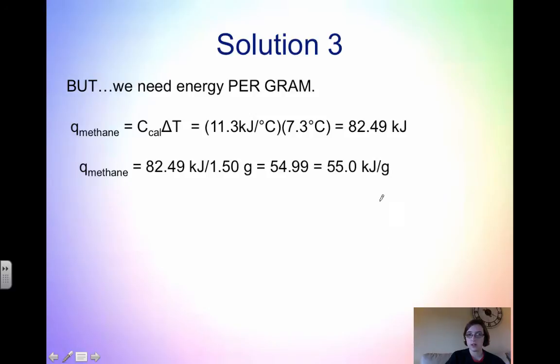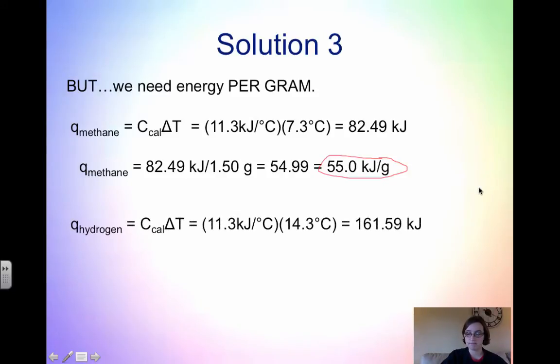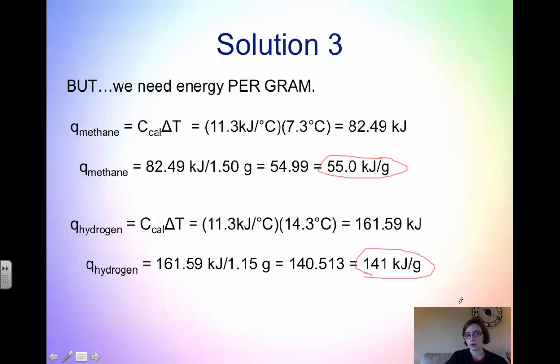So for methane, we have 55 kilojoules per gram. If we burn 1 gram of methane, we produce 55 kilojoules of energy. Then for hydrogen, that was 161.59 kilojoules, but that was for 1.15 grams. If we divide the two and round it to 3 significant figures, we get 141 kilojoules per gram. Now we can compare methane and hydrogen because it's in kilojoules per gram.